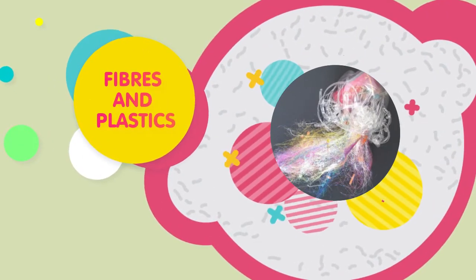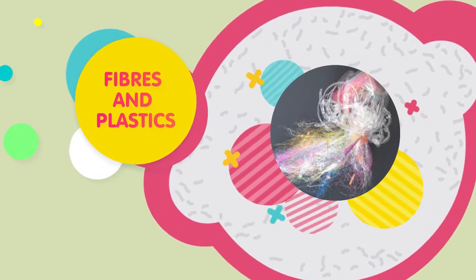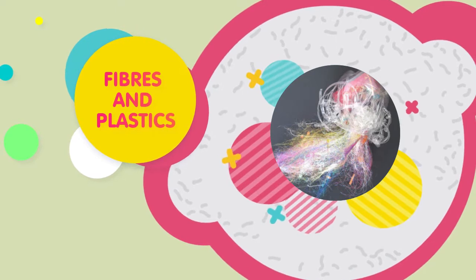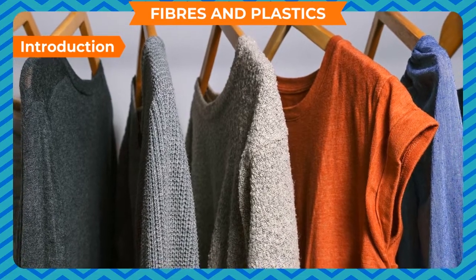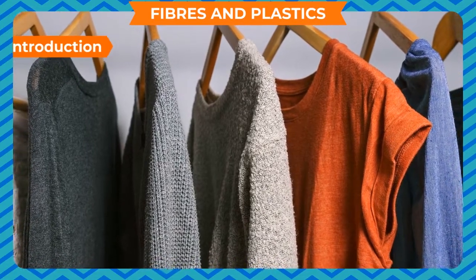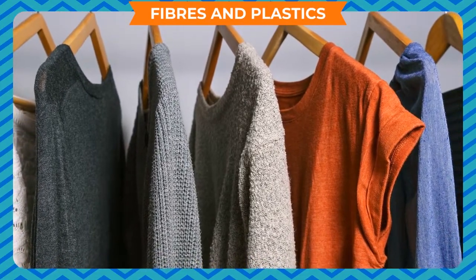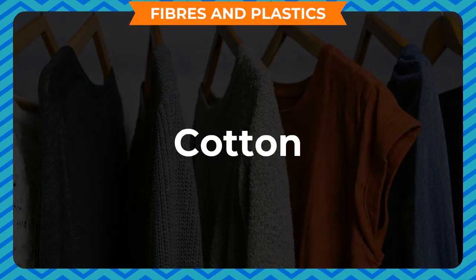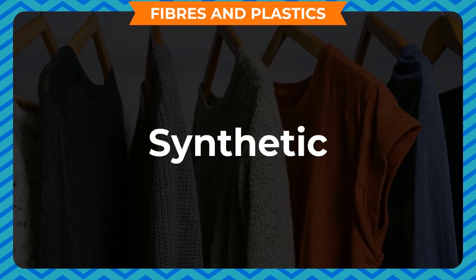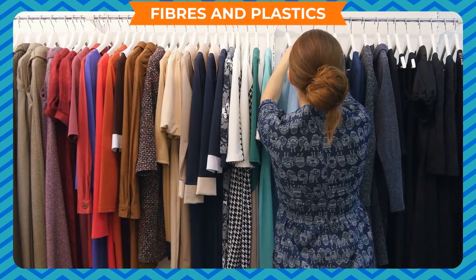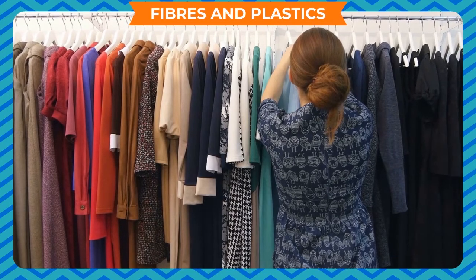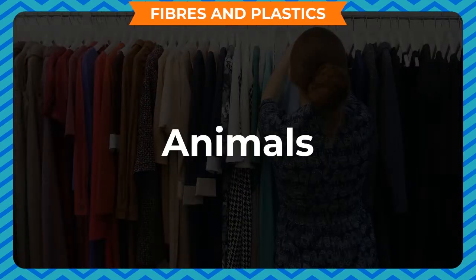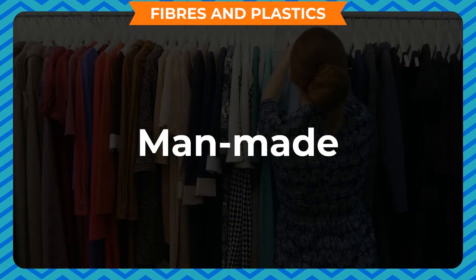Fibers and Plastics. Our clothes are made up of different types of fabrics. Woolen, cotton, silk and synthetic are some of the important fibers that are either obtained from plants, animals or man-made.